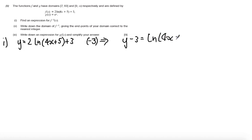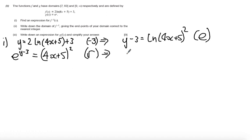So at this point what I'm going to do is I'm now going to take e for both sides. So I'll put the squared up there. So I'm going to have e^(y-3) is equal to (4x+5)^2. I can take the square root of both sides. So taking the square root of e^(y-3). Remember this is multiplying by half. This is equal to 4x+5.